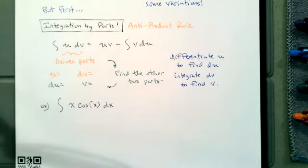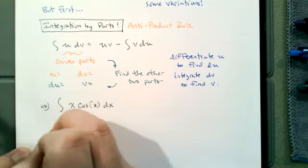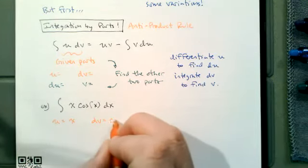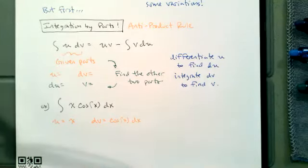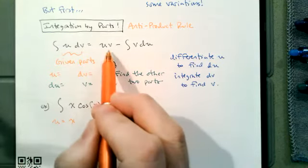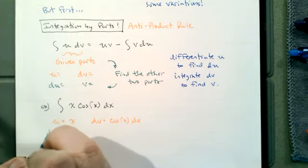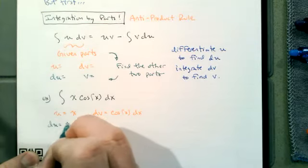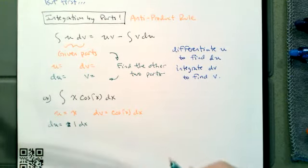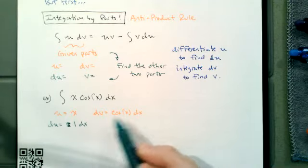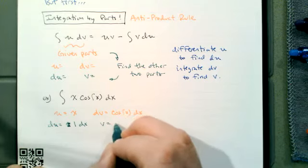For integration by parts, we pick one factor to be U. I'll say U is x, and dV is the rest: cosine of x dx. That's how I split the factors. Then I need to find the other two parts, V and dU. We differentiate to find dU: if U is x, then dU is 1 dx. We integrate dV: the integral of cosine x is sine x, so V is sine x.